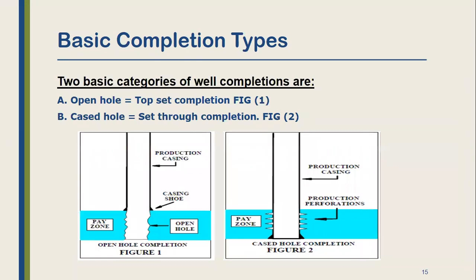There is an important difference between open hole and cased hole completion. In cased hole completion, the completion is set through the pay zone. In open hole completion, the completion is placed above the pay zone. In the main course, we will cover definitions, applications, advantages, and disadvantages for each type.